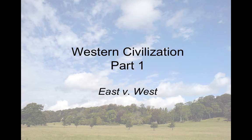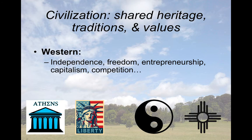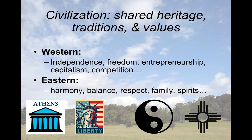Western Civilization Part 1: East vs. West. When we look at civilization, civilization is a shared heritage, traditions, and values. We have basically two major schools of thought: Western and Eastern. Western thought comes from Athens, Greece, and deals with ideas of independence, freedom, entrepreneurship, capitalism, competition, and rationalism. Eastern school of thought is more into harmony, balance, respect, family, and spirits — as you see with the balance of the yin and the yang and the Navajo sun. Neither school of thought is better than the other.